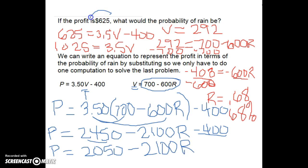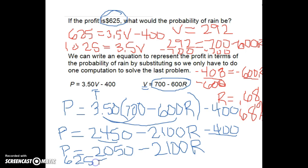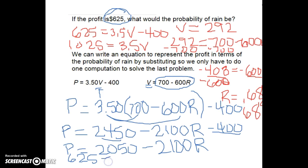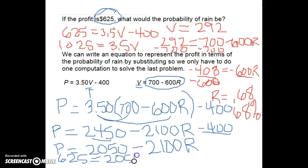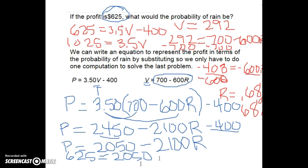Now remember I'm going to try to solve this problem, and they tell me that my profit is $625. So in order to solve this, I'm going to set my profit equal to $625. So 625 equals 2,050 minus 2,100R.